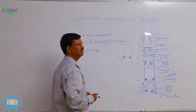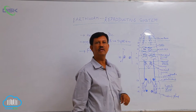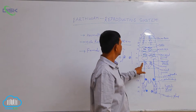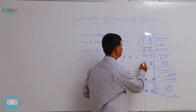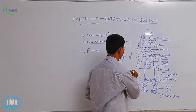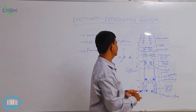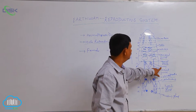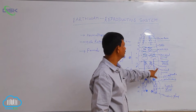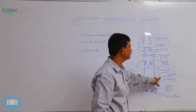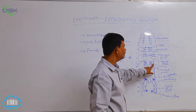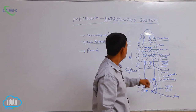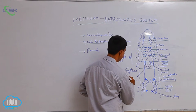The female reproductive system is very simple compared to the male reproductive system. One pair of ovaries is present in the 13th segment, attached to the 12/13th septum. They are grape-like structures that produce the female gametes or ova. Behind the ovary, a funnel-like structure known as the oviducal funnel receives the ova from the surrounding and opens into a tube known as the oviduct.